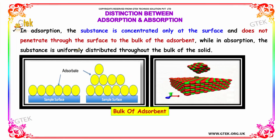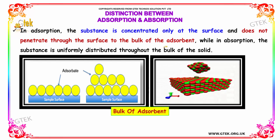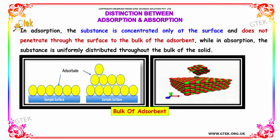In adsorption, the substance is concentrated only at the surface and does not penetrate through the surface to the bulk of the adsorbent. While in absorption, the substance is uniformly distributed throughout the bulk of the solid.